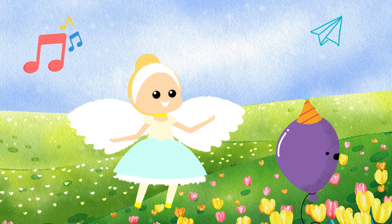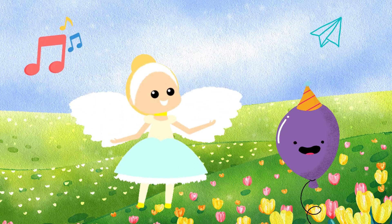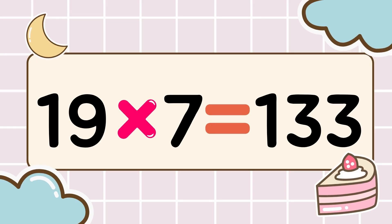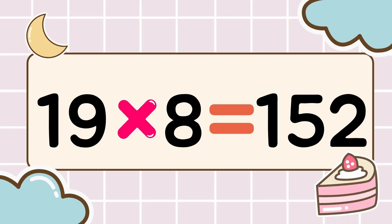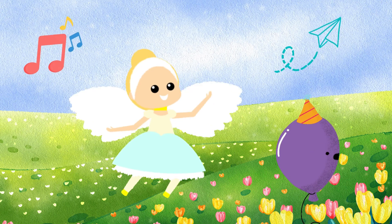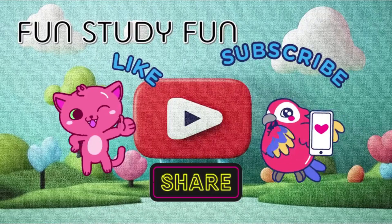You did it perfectly so far! Multiplication mode stays on! Let's go to the next level! 19 times 6 is 114, 19 times 7 is 133, 19 times 8 is 152, 19 times 9 is 171. Learning times tables is so fun. We are fun, study fun!